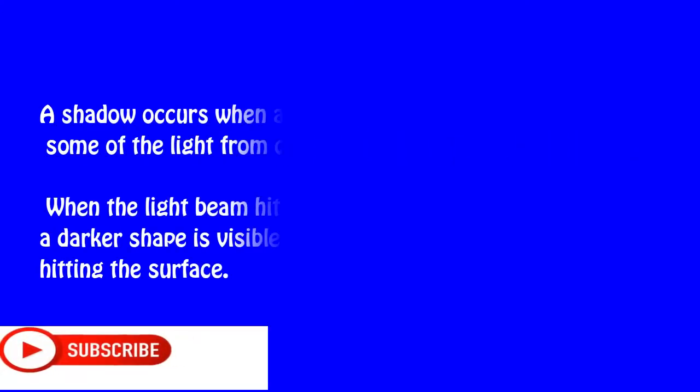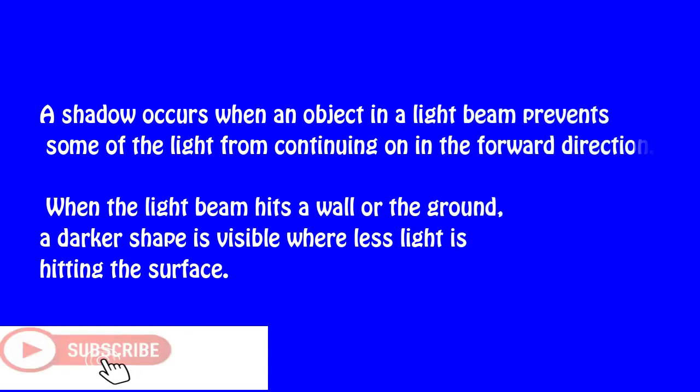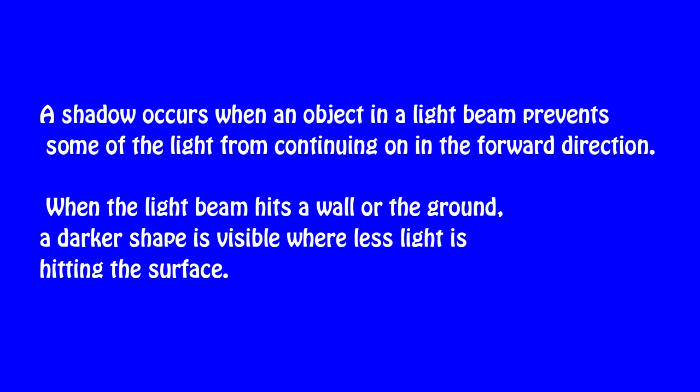Qualification: A shadow occurs when an object in a light beam prevents some of the light from continuing on in the forward direction. When the light beam hits a wall or the ground, a dark shape is visible where less light is hitting the surface.